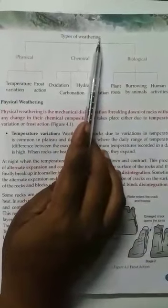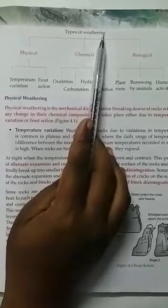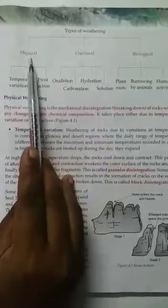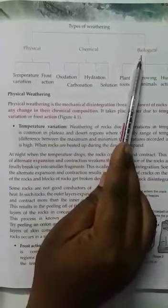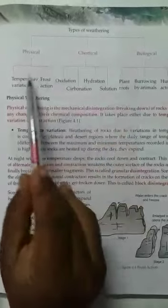Types of weathering: there are three types of weathering - physical, chemical, and biological. In these three types of weathering, there are also subdivisions. So today we will take the topic physical weathering.